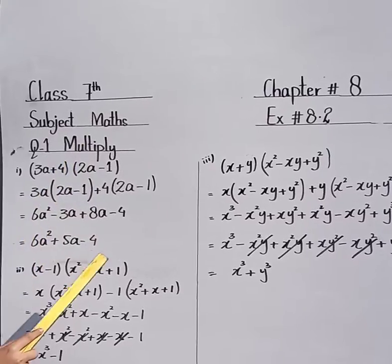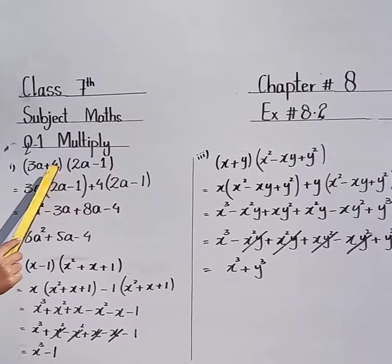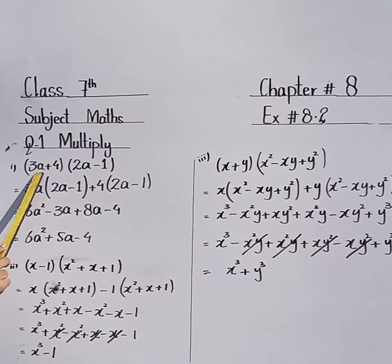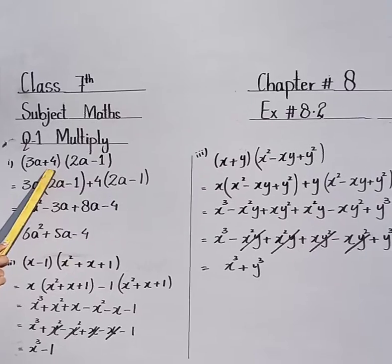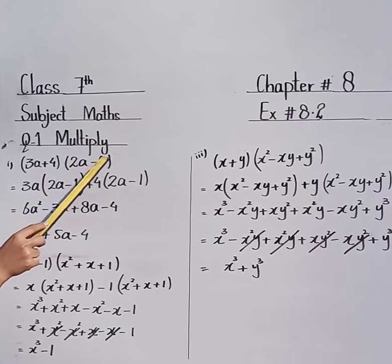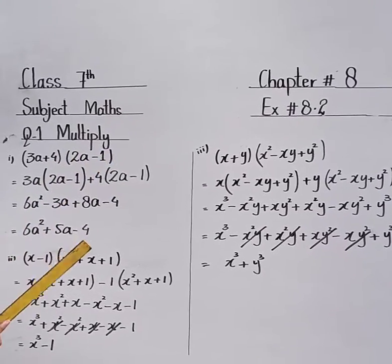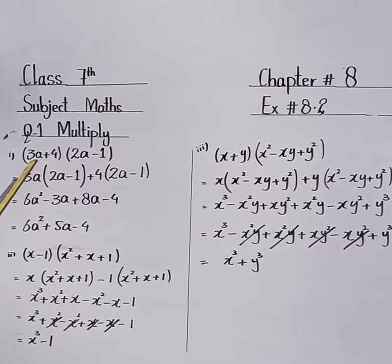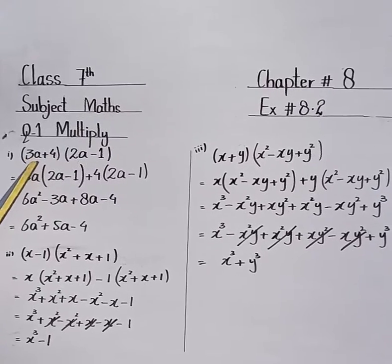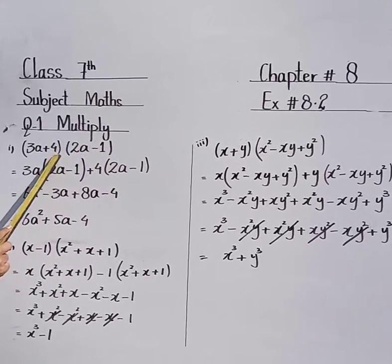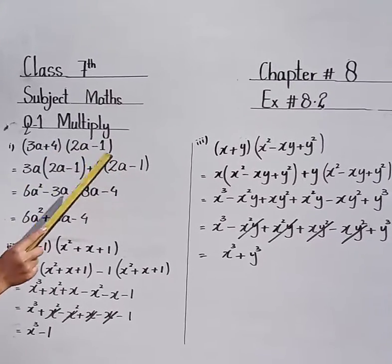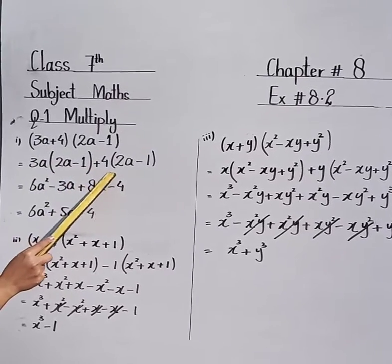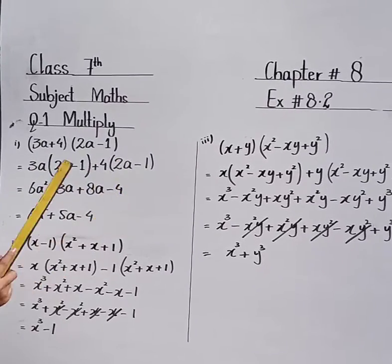Here two algebraic expressions are given and we have to multiply both expressions. The first part is (3a + 4) into (2a - 1). We will multiply both algebraic expressions. First we will multiply 3a by (2a - 1), then 4 by (2a - 1): 3a into (2a - 1) plus 4 into (2a - 1).